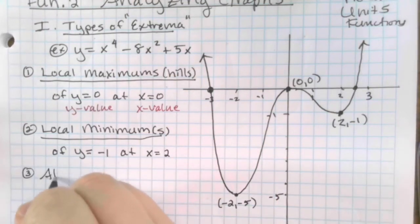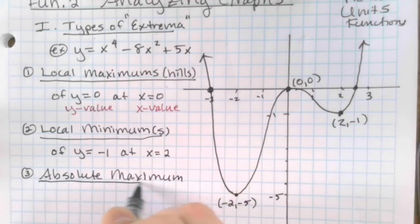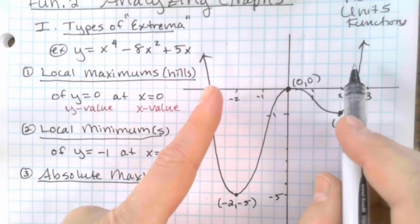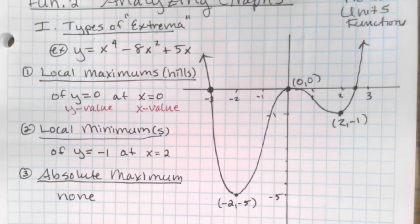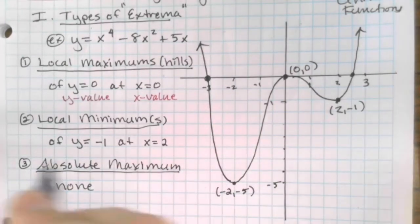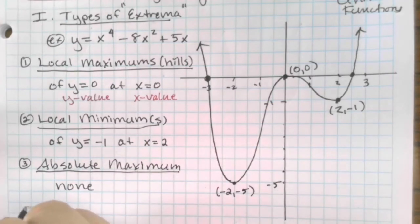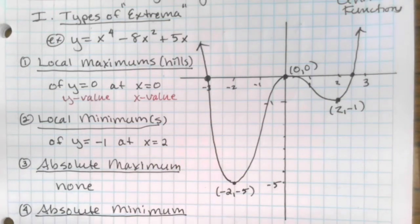Those are locals. Now we're going to do absolute maximum, which is the tallest point of the graph. This graph keeps going — it never stops — so there actually are none for absolute maximum. There's no absolute maximum; it's unbounded on the top, so bounded on the bottom only. And then number four, the absolute minimum means the absolute lowest value on the graph, which is y equals negative 5 at x equals negative 2.